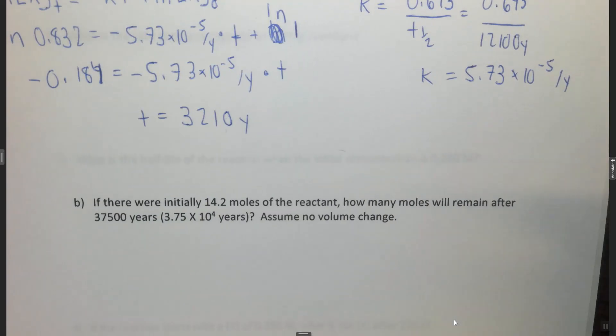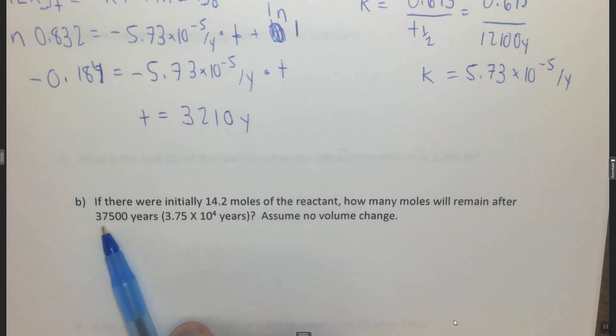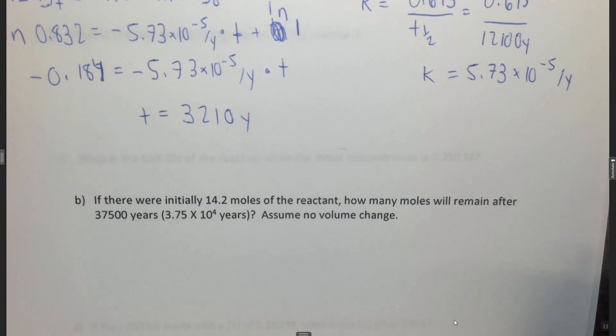So if you haven't already watched the first part, please start with that. It says if there are initially 14.2 moles of reactant, how many moles will remain after 37,500 years, or 3.75 times 10 to the 4 years. Assume no volume change. So basically if you have moles, then you also have molarity if the volume is constant.